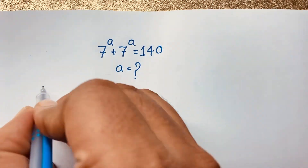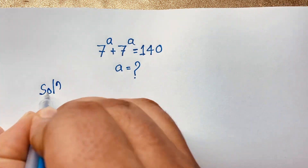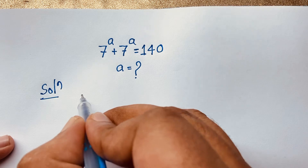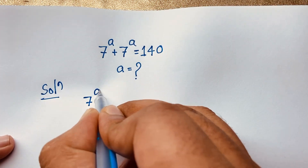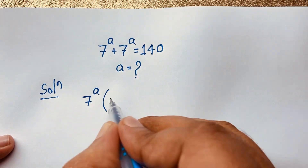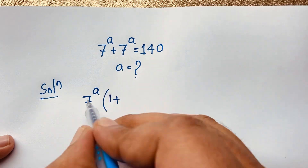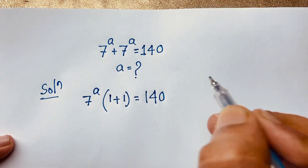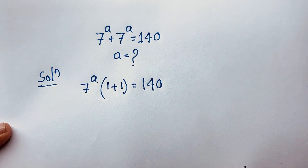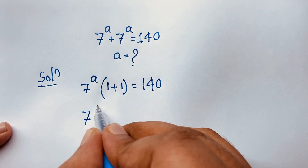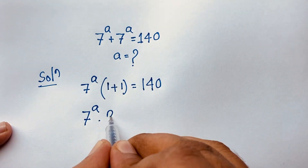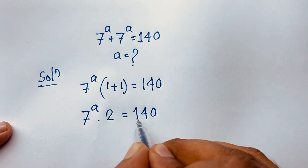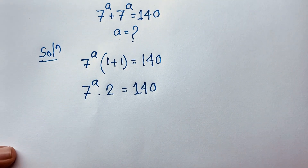Here, 7 to the power a is common. We factor it out: 7 to the power a times (1 plus 1) is equal to 140. So 7 to the power a times 2 is equal to 140.